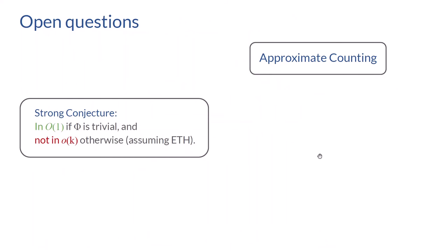That was everything I wanted to show you. Let me conclude with some open questions. It would be very nice if somebody could prove the strong conjecture that you cannot beat brute force whenever you have a non-trivial property. If you're interested in efficient algorithms, the exact counting version seems incredibly hard, so you might go for approximation. There are already very nice efficient approximation algorithms due to Meeks for cases where exact counting is hard. Thank you very much.